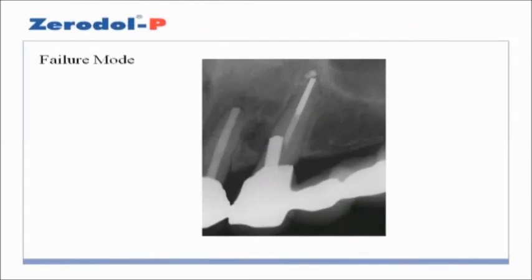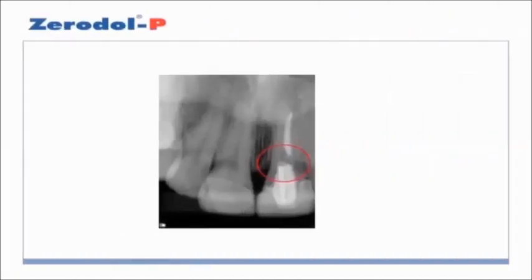Failure mode: an important factor related to resistance is failure mode. All post systems have some percentage of clinical failure. However, some posts cause a higher percentage of failures that result in teeth that are non-restorable. For example, teeth restored with less rigid posts such as fibre posts tend to have failures that are more likely to be restorable. The largest ideal diameter for a post is the diameter of the root at the most apical portion of the post space.